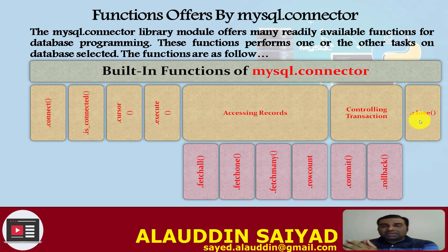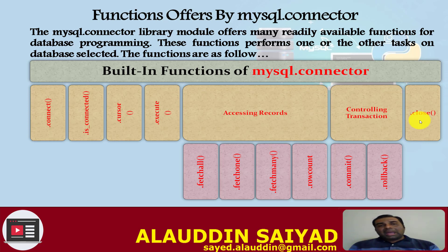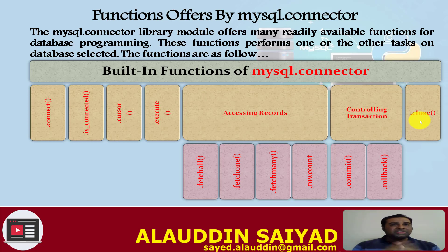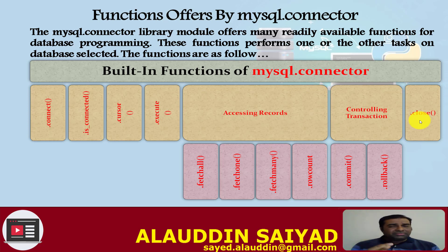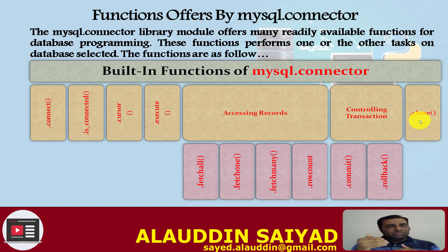If there are 10 records and you want all of them fetched from the result set, use fetchall(). If you want to fetch records one at a time — first, then second, then third — use fetchone(). Each call to fetchone() brings the next record from the result set sequentially from first to last.